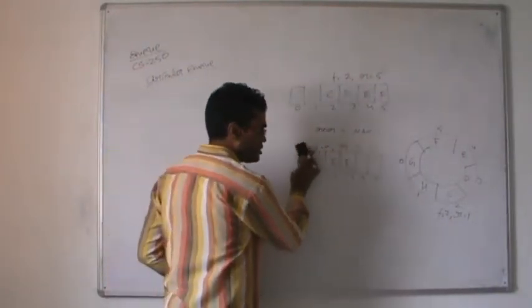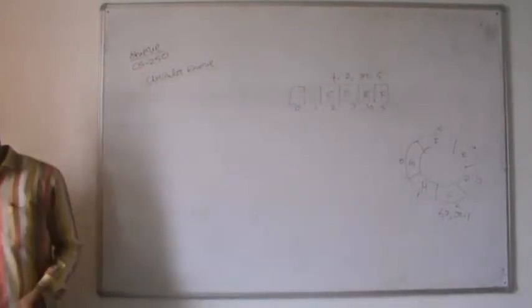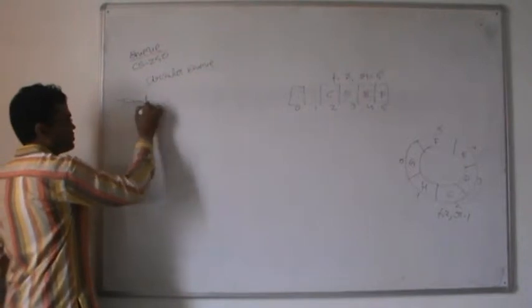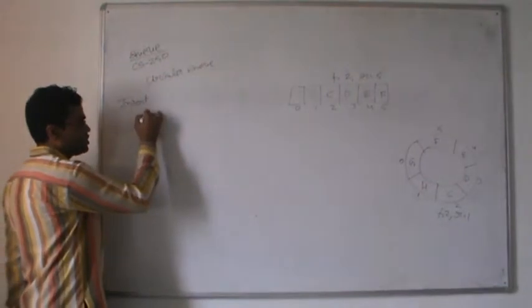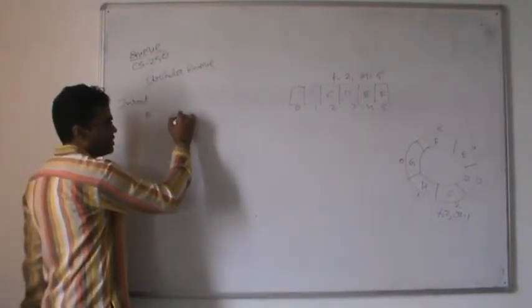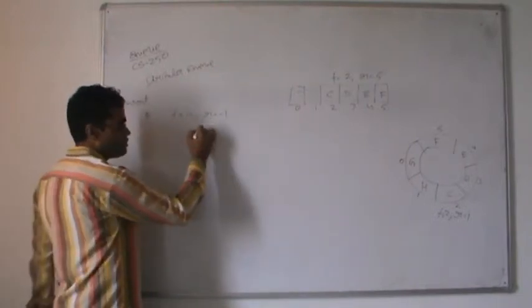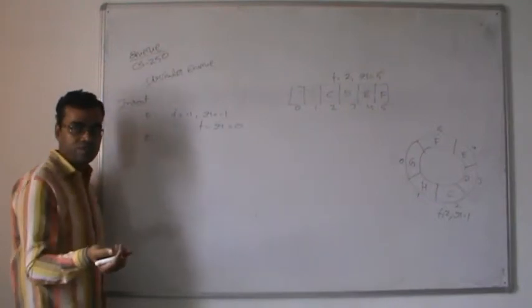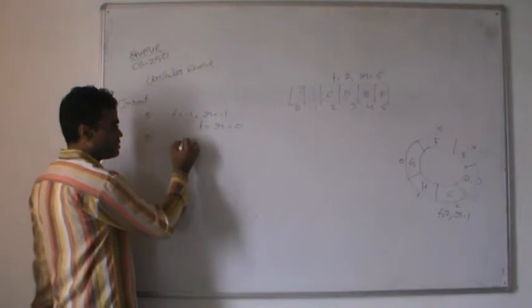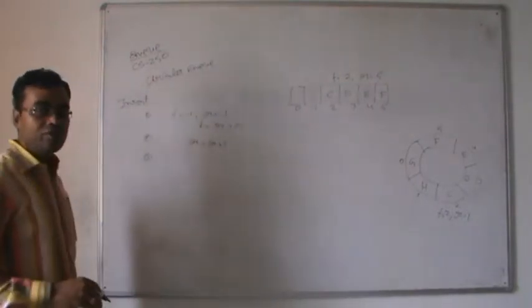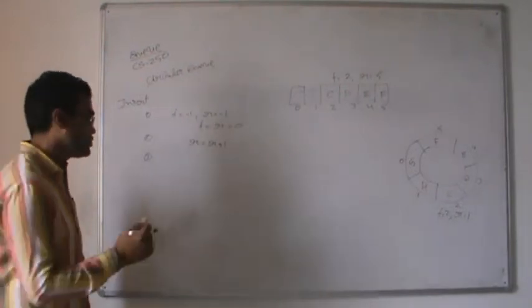For the insert operation in the circular queue, first we test whether the queue is empty - if front is minus one and rear is minus one, then we set both front and rear to zero. When performing insertion, rear is incremented: rear equals rear plus one. We also test for the full queue. One condition for full queue is if front equals zero and rear equals MAX minus one.